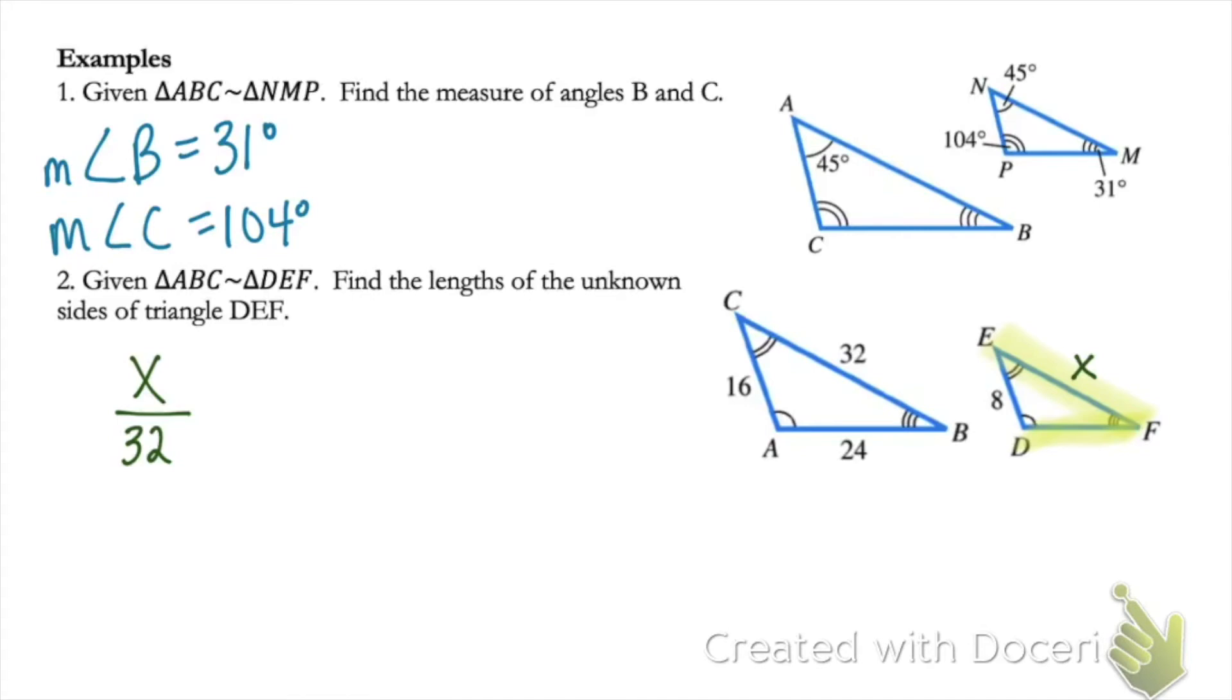Now the only other side that we know on triangle DEF is side ED. That side corresponds to side CA on the other triangle. So I can set up another ratio here, 8 over 16. Since the two triangles are similar, these ratios have to be equal. So now I can just cross multiply and solve for X. I find that side EF is 16 units long.